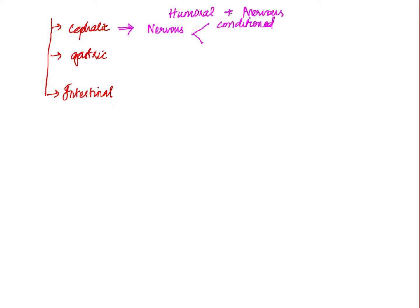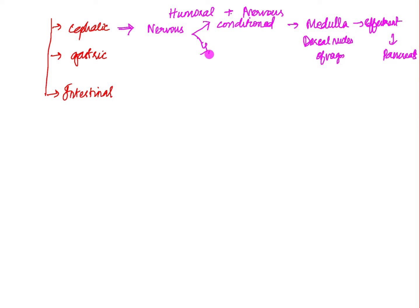The conditioned reflex is mainly by special senses — just the sight, smell, hearing, or even the thought of food activates special sensory organs. Afferent impulses travel to the medulla oblongata, specifically the dorsal nucleus of the vagus, and through efferent pathways reach the pancreas to stimulate pancreatic juice secretion.